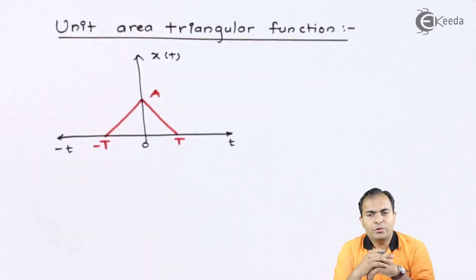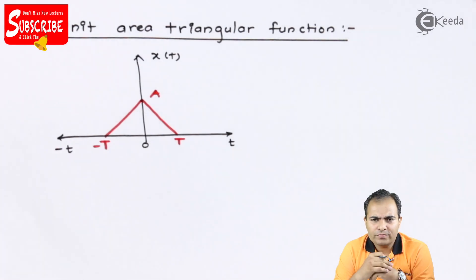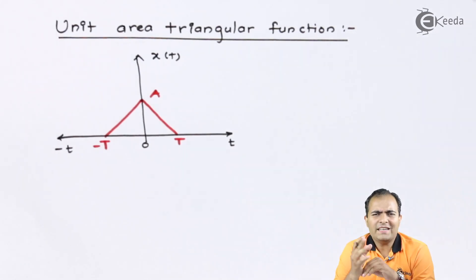In this graph you can say that the amplitude or height is 1 and the base length is 2. This is the unit area triangle. It is also known as isosceles triangle.